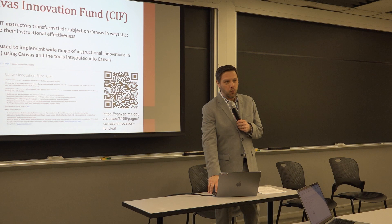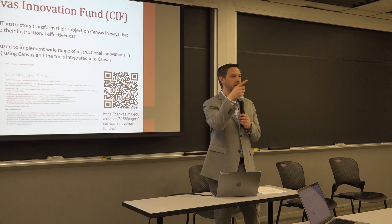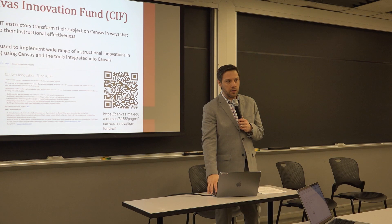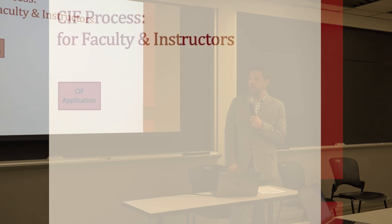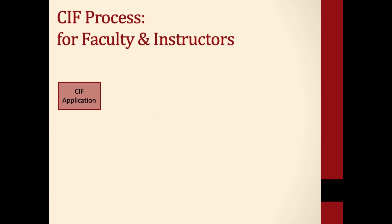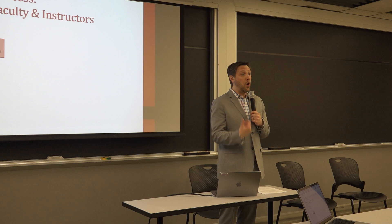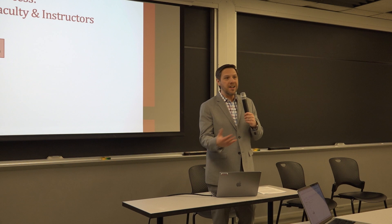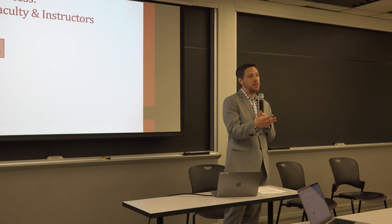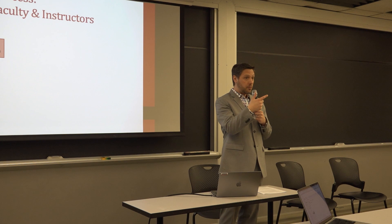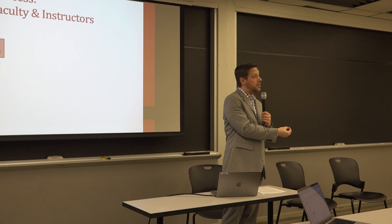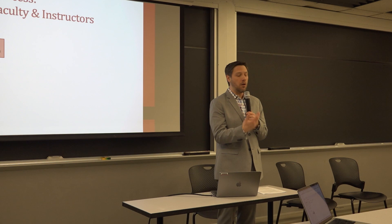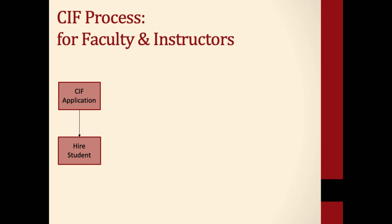What does this actually look like? The first step is you submit an application — it's pretty easy and shouldn't take more than 10 or 15 minutes. We collect an idea of what you're trying to accomplish, what your goals are for transforming the course. We select award winners. As part of that award work, we ask you to identify a student who you think would be great to work on your course as a learning technologist over the summer, working directly with you and our team. The student ideally has either taken the course or been a UTA, and can work up to about 20 hours a week on the project.